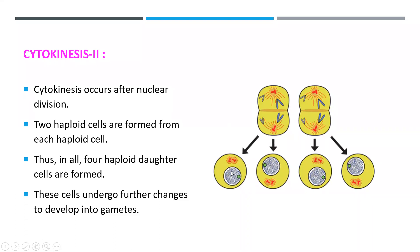Each haploid cell has 23 chromosomes. These cells undergo further development to become gametes. In human beings, gametes are in the form of sperm in males and ova (eggs) in females. After meiosis 1 and meiosis 2, the gametes — sperm and ova — are formed.